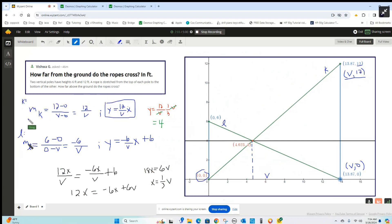For line L, the slope is 6 minus 0 over 0 minus V, which simplifies to negative 6 over V.